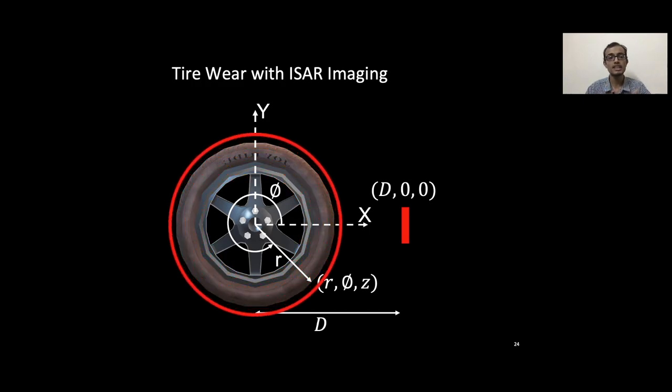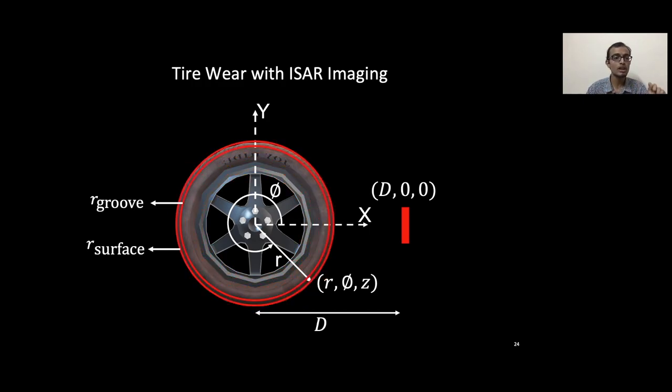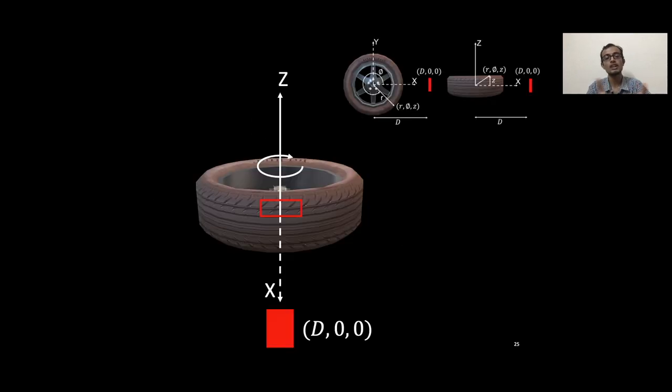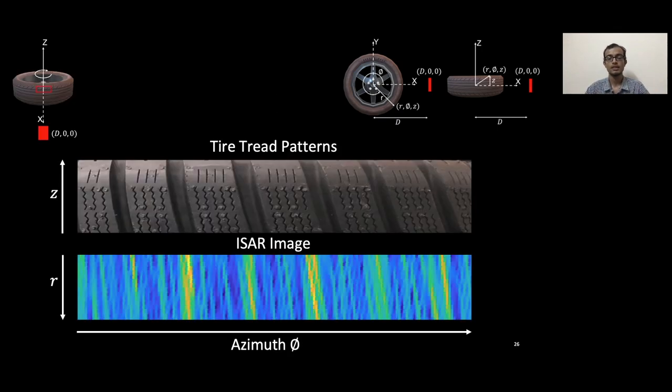Remember, all we need is two radii, one corresponding to the surface and the groove. First, let's look at what an ISAR image would look like when imaged at this particular portion of the tire. We see strong tread-like patterns appearing even in the ISAR image.